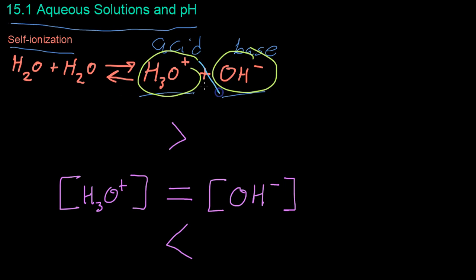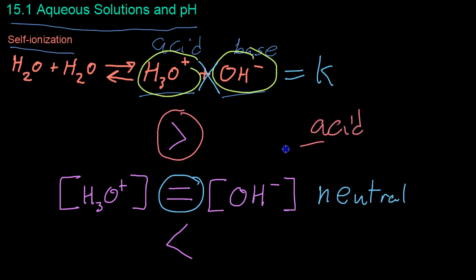Because these two have to multiply to equal the ionization constant of water, there's basically only three relationships that can exist between these two numbers. Either they can be equal, in which case the solution is called neutral, you can have more hydronium than hydroxide, in which case it's acidic, or it can be basic, in which case the hydroxide has a higher concentration.